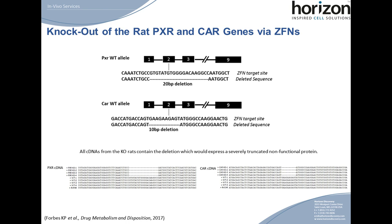We set out to generate rats knocked out for the PXR and CAR receptors. In both cases, we targeted exon 2 of each gene with zinc-finger nucleases. For PXR, we identified a founder with a 20-base pair deletion, and for CAR, a 10-base pair deletion. We bred these models to homozygosity and isolated RNA from extracted livers and generated cDNAs for each gene. All the cDNAs in the corresponding knockout animals contained the deletion sequence, encoding a severely truncated protein lacking the ligand and DNA binding domains of each receptor, suggesting we would lose receptor function in those knockout lines compared to wild-type rats.